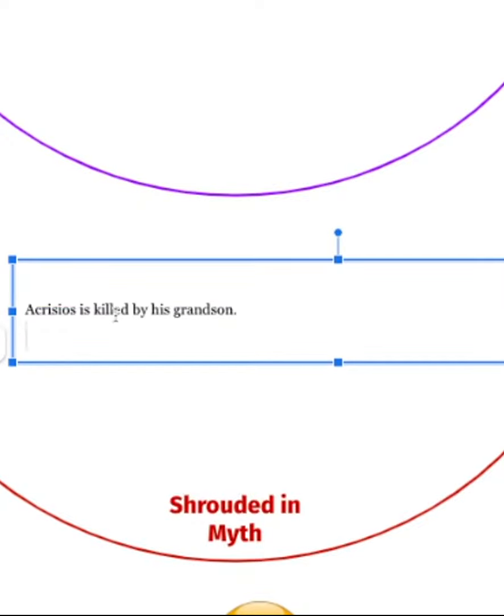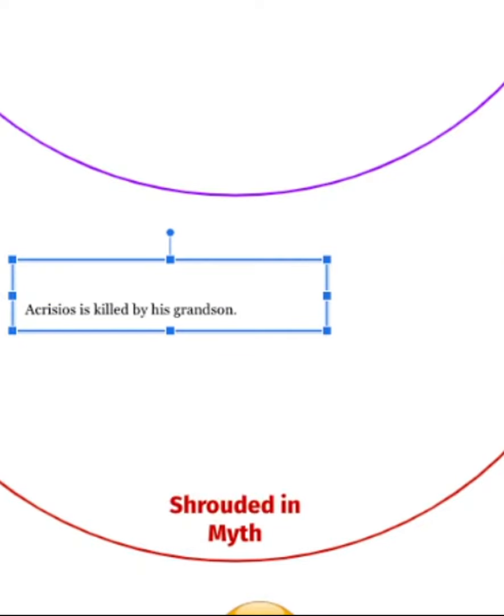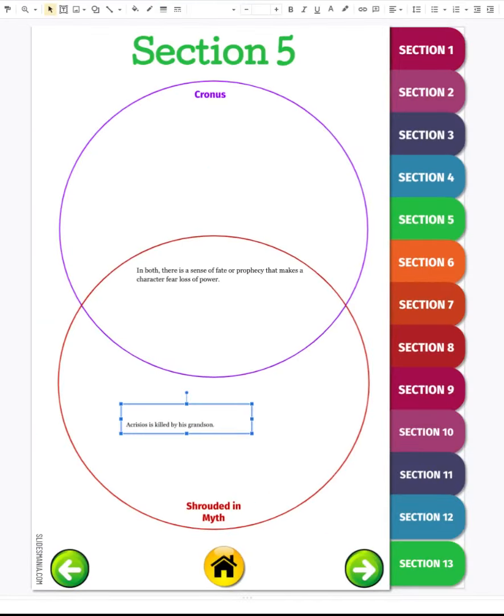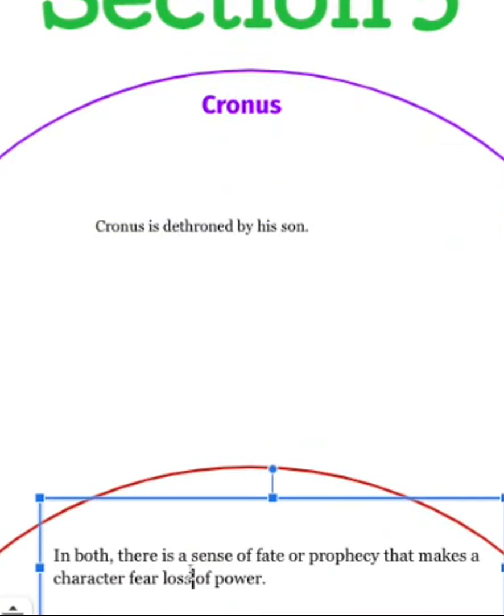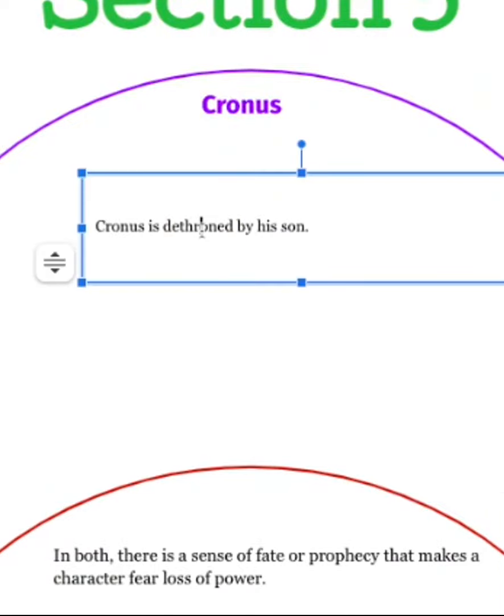And so I'm going to fill this circle in as well. And then in Cronus, what is similar but different is that in Cronus he was dethroned by his son. So there's still that loss of power and the fear of power that was similar, but this is how they were different.